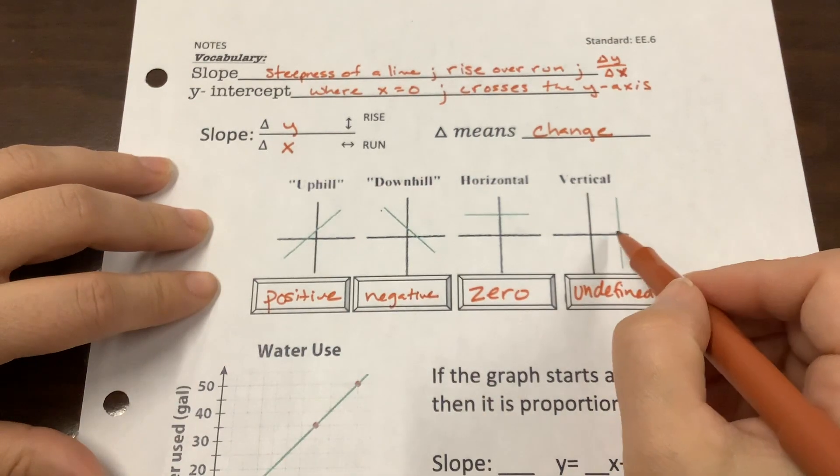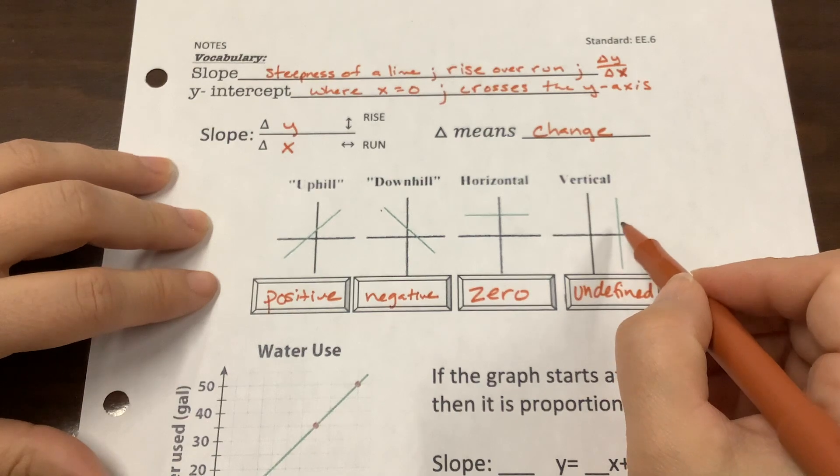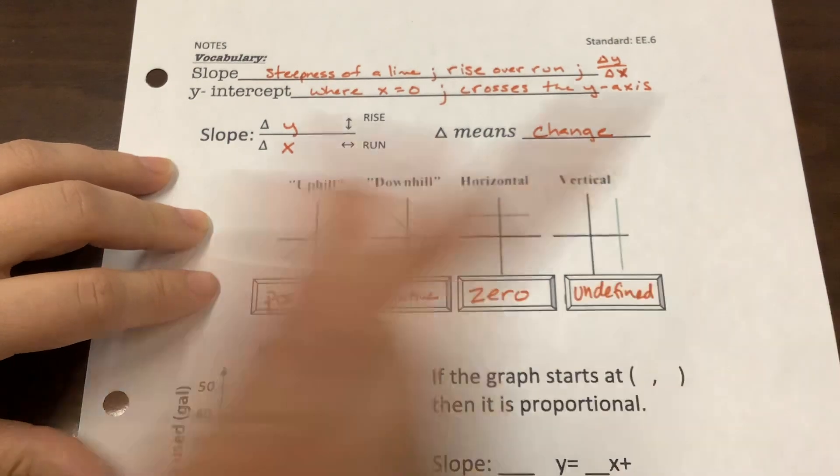Because if we were trying to count the rise over the run, it would be a number divided by 0, and that's undefined. We can't do that.